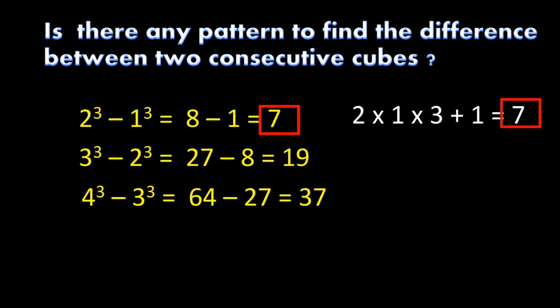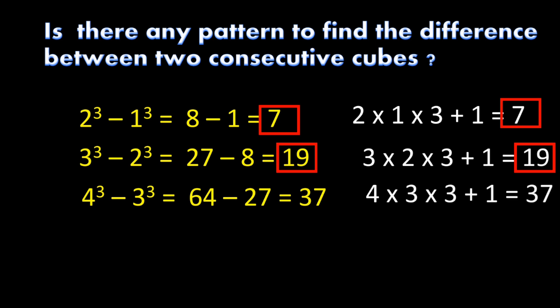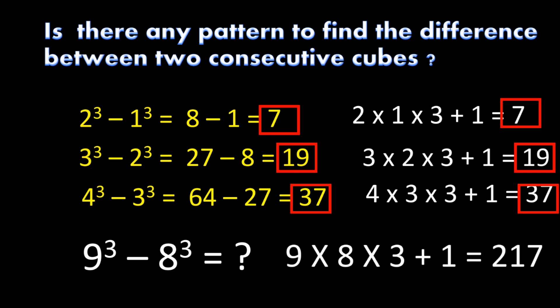For example, 3 cube − 2 cube: compute 3 × 2 × 3 + 1 = 19. For 4 cube − 3 cube: compute 4 × 3 × 3 + 1 = 37. For 9 cube − 8 cube: compute 8 × 9 × 3 + 1 = 217. In this way we can find the difference between any two consecutive cubes.